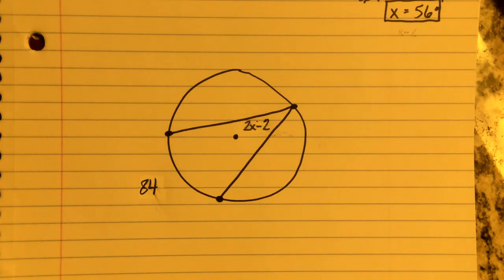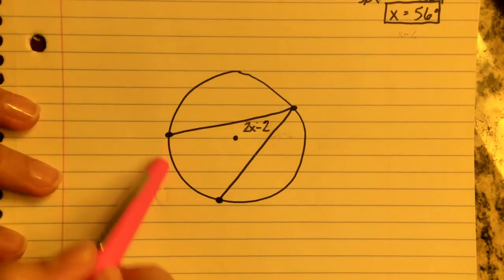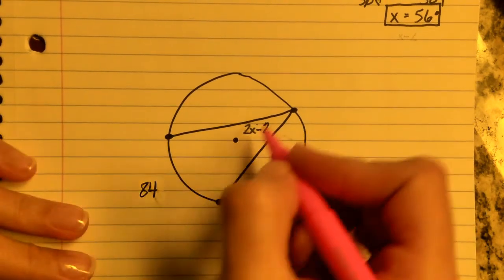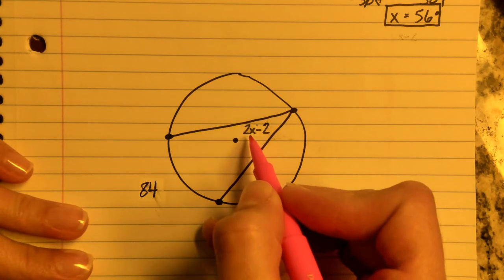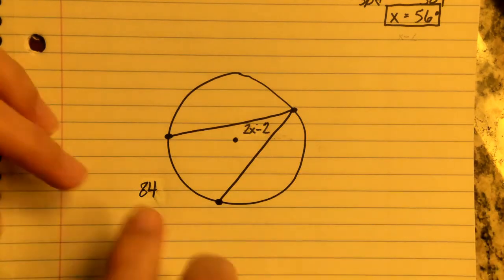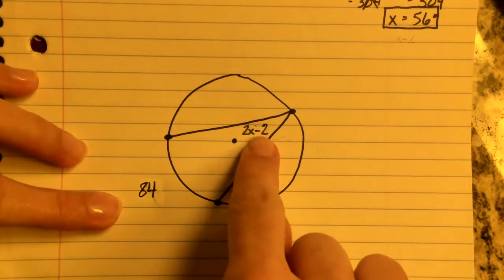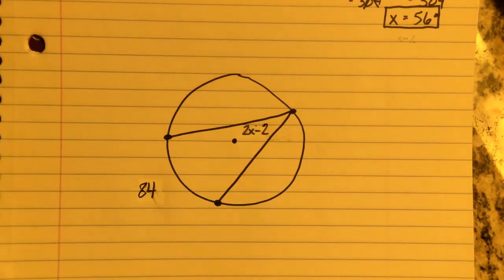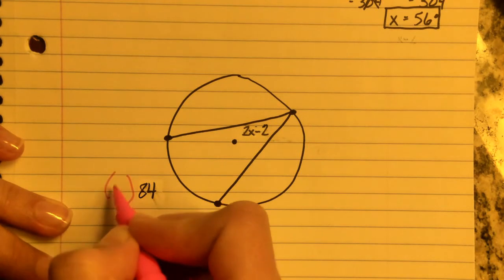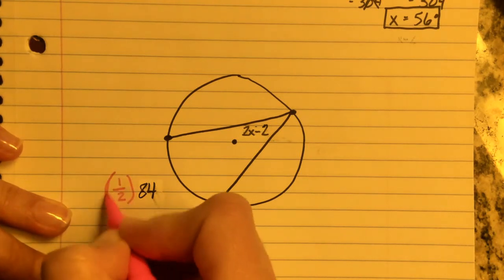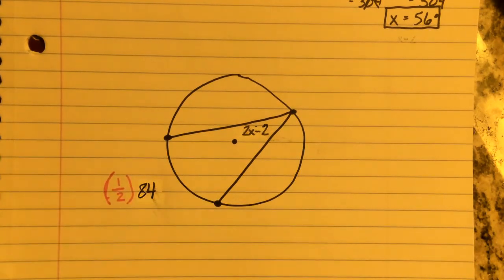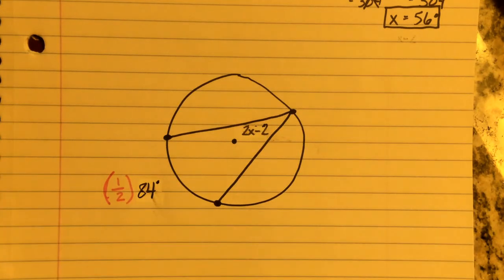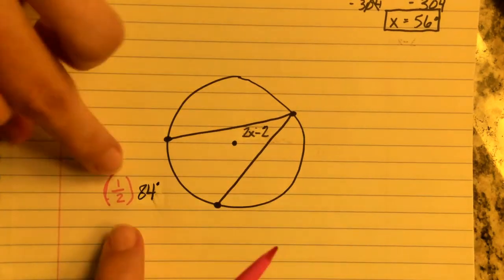But what you need to remember is that this arc right here is 2 times the 2X minus 2. You can approach this two different ways. You can either double up 2X minus 2 and equal it to 84. In my opinion, it's a whole lot easier if you take half of this arc measurement, 84 degrees...